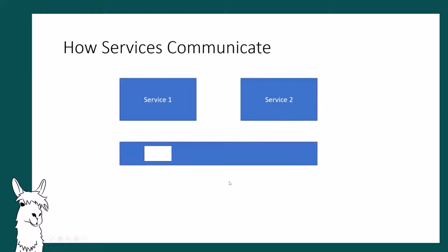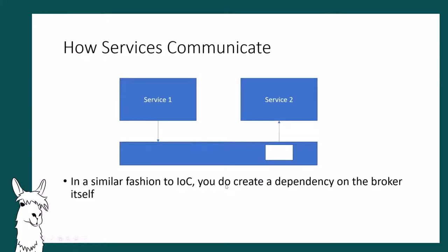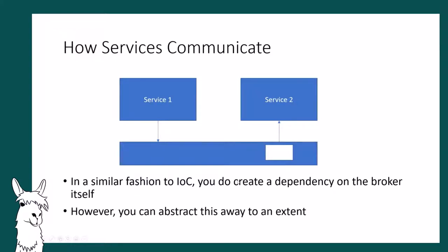If we talk about how these services communicate: service one puts a message on a queue and service two takes that message off the queue, which means neither service one nor service two know about each other directly. It's a bit like IoC — you lose your dependency on the thing you're dependent on, but then you gain a dependency on the abstraction. But you can abstract your abstraction if you like.